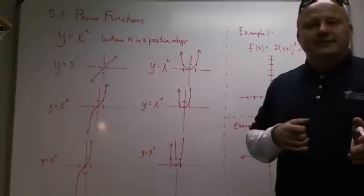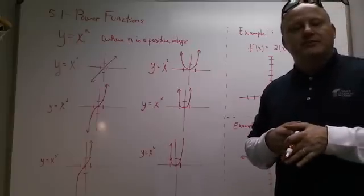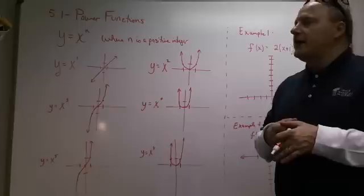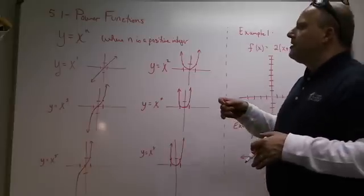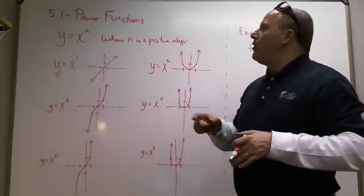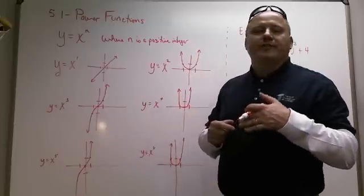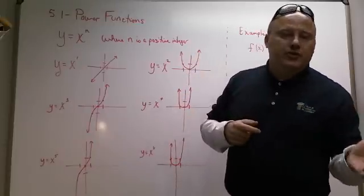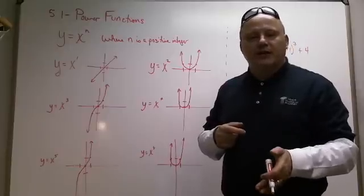I like to think of power functions as baby polynomial functions. What a power function looks like is y equals x to the nth, where n is some positive integer, so you could have y equals x to the 1st, y equals x to the 2nd, y equals x to the 3rd, y equals x to the 4th, and so on down the line.